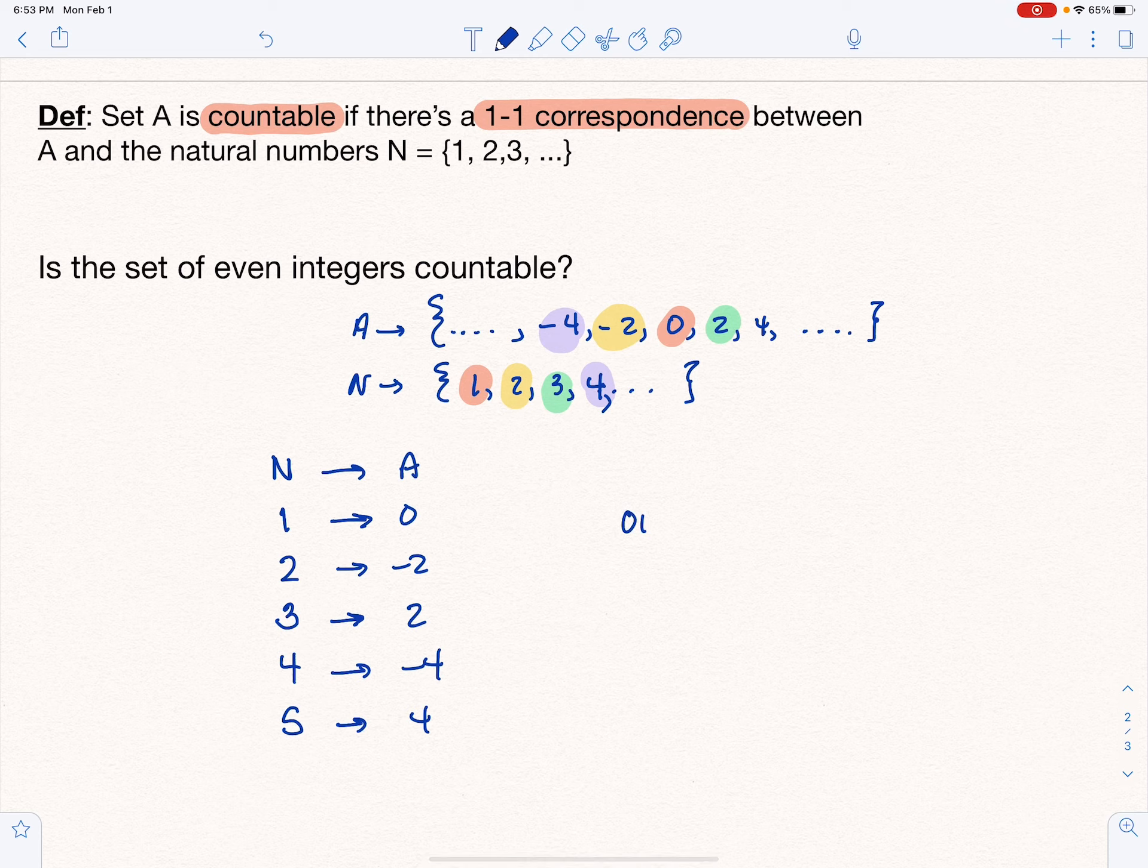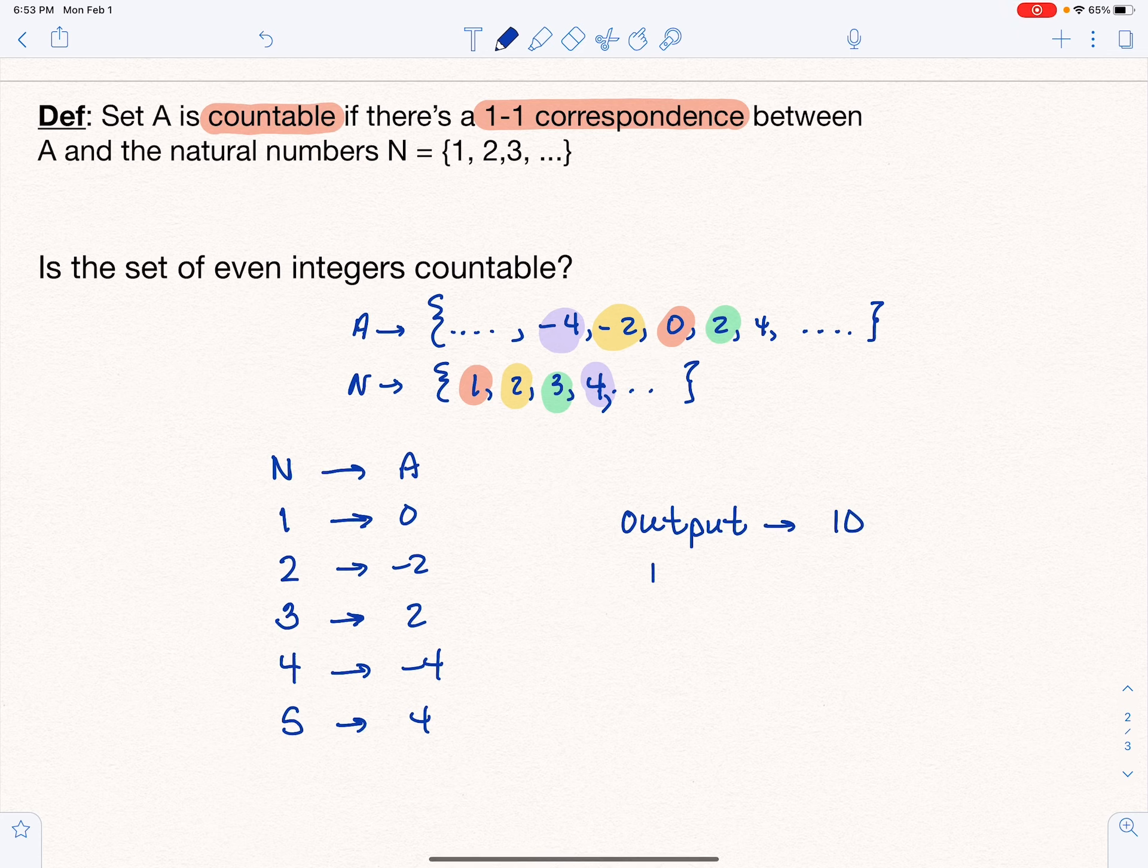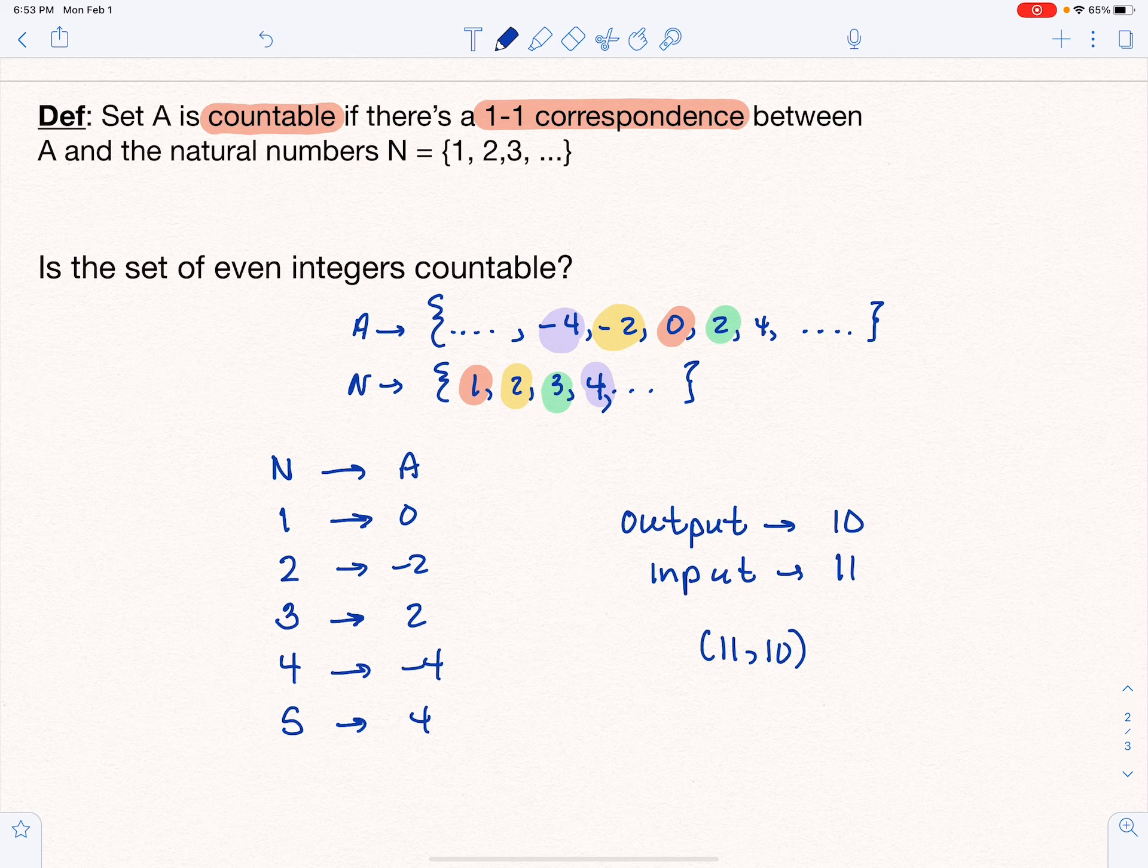So if the output value is, say, 10, what is the input? Let's see. One goes to zero, three goes to two, five goes to four. So all the odd inputs go to even positive numbers. That would mean seven goes to six, nine goes to eight. It would be 11. So that means (11, 10) is a point on this correspondence.